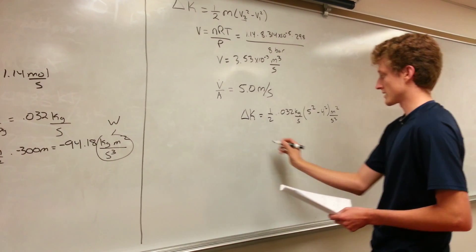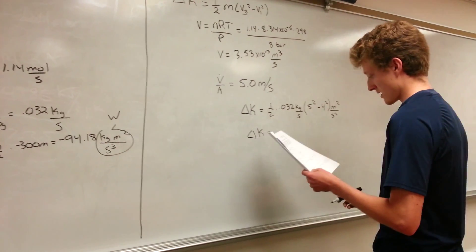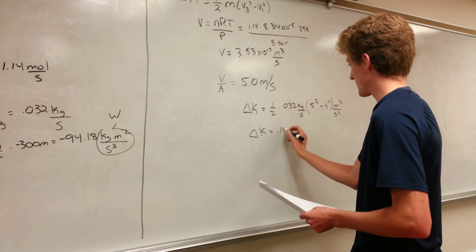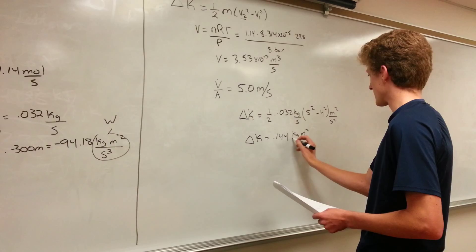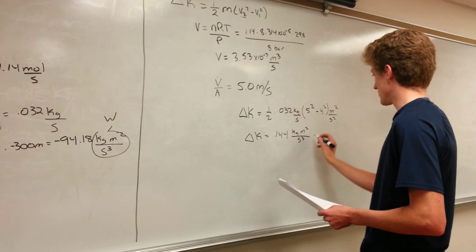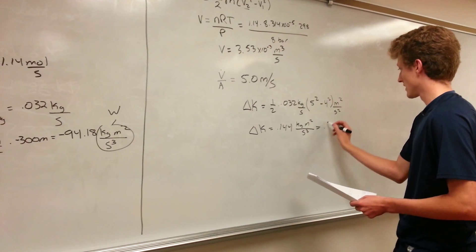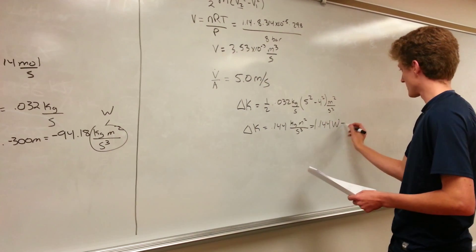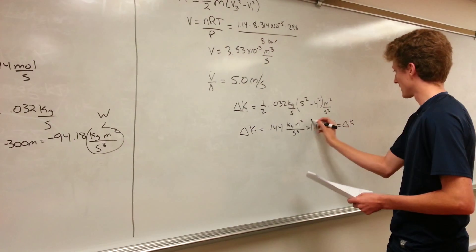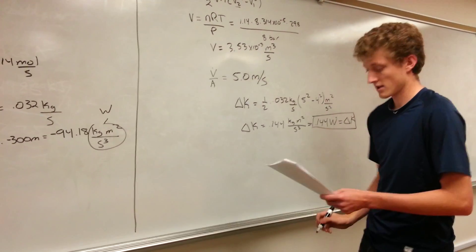And this gives us delta K of 0.144 kilograms meters squared per second cubed, which is the same as a watt. So our answer is 0.144 watts. That's our delta K. And that's the solution.